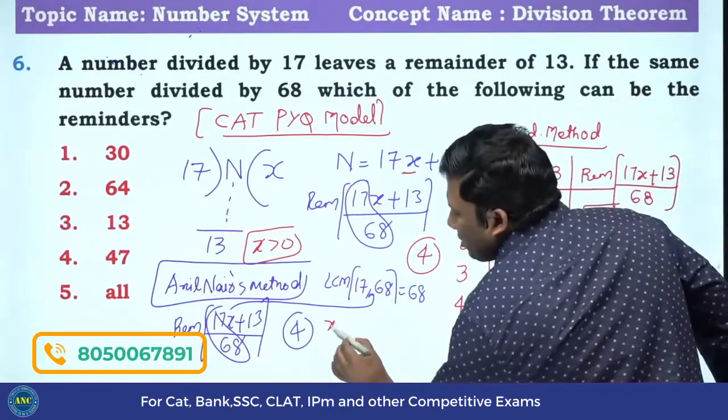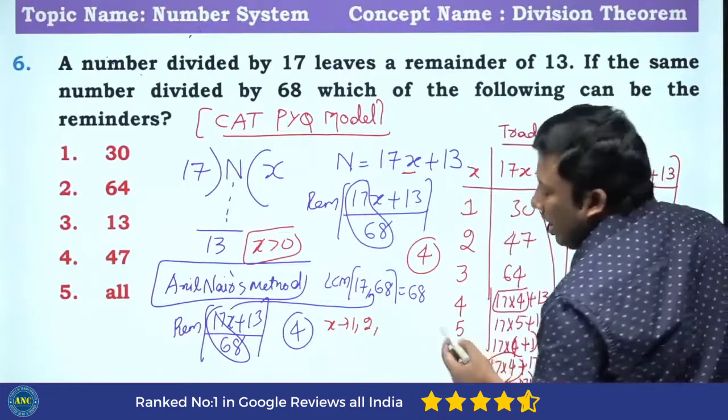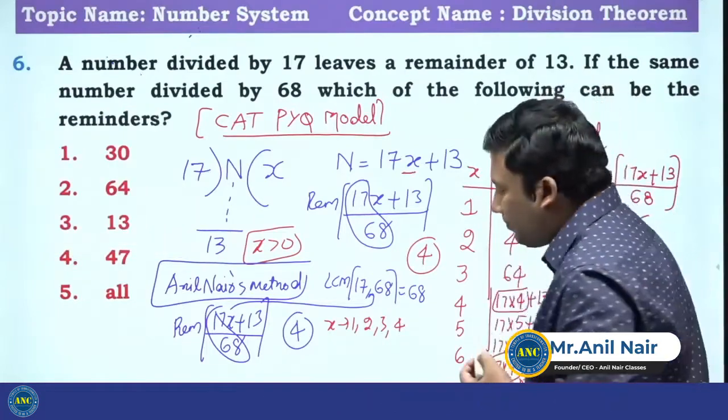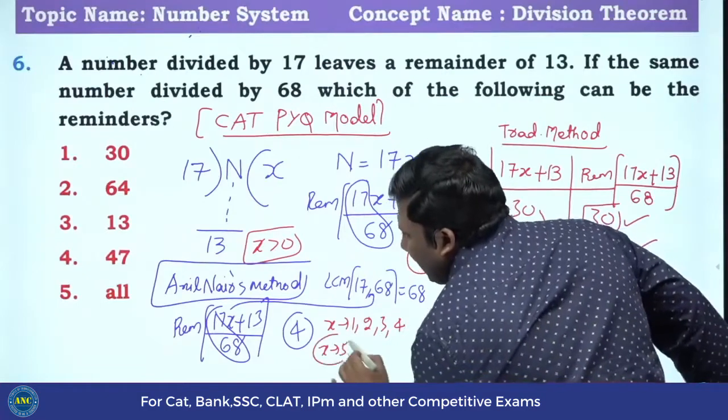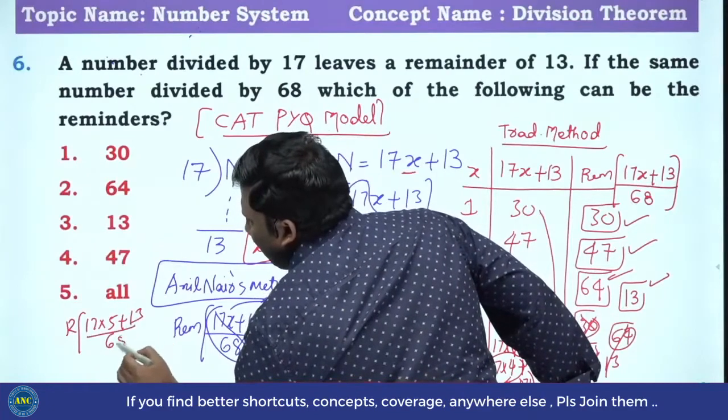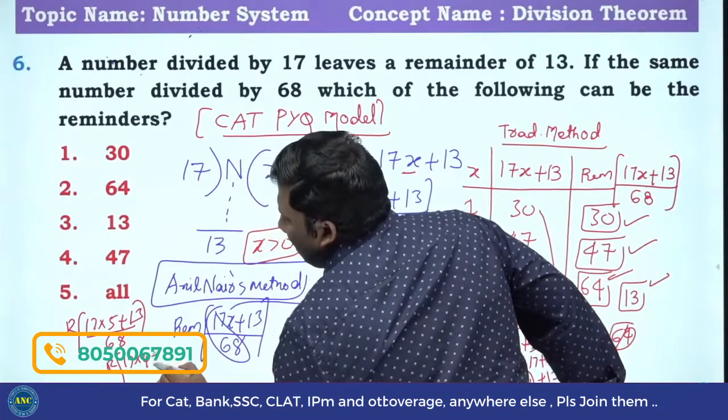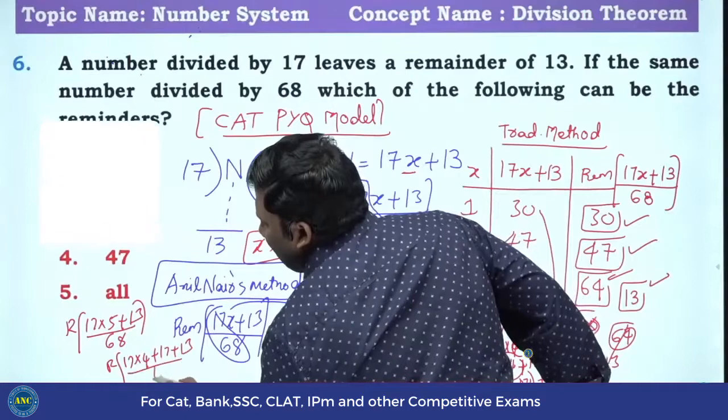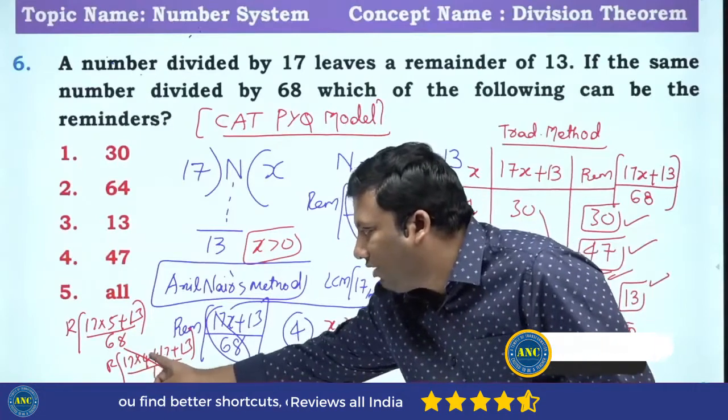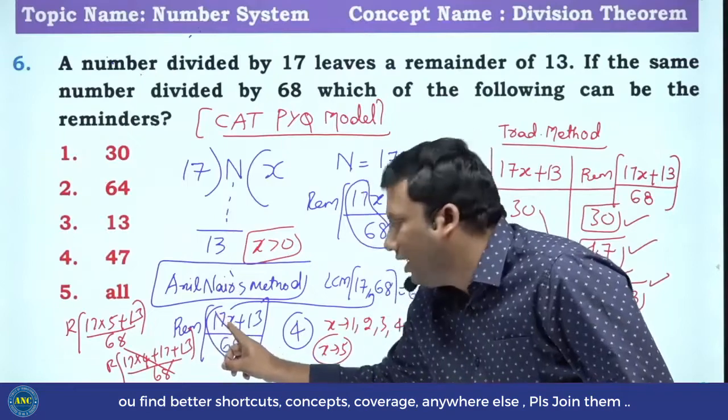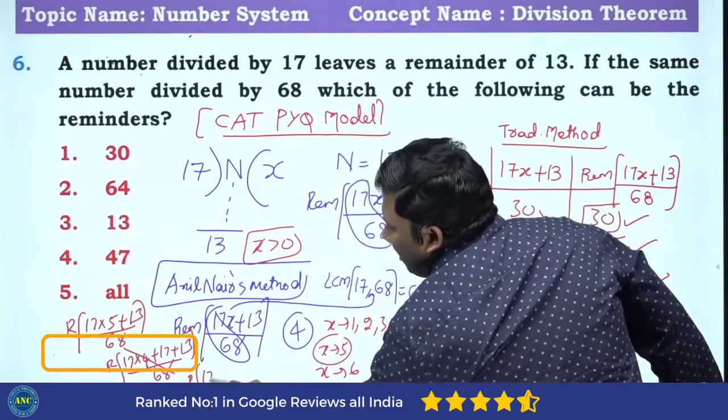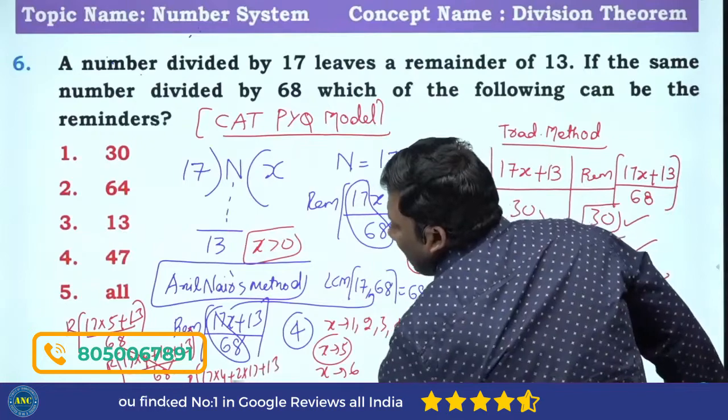Why it is happening? Listen carefully sir. X will be 1 value, I will get a remainder. X is 2, I will get a remainder. X is 3, I will get a remainder. X is 4, I will get a remainder. Yes or no? If I take X value 5, just now we discussed, 17 into 5 plus 13 divided by 68. This can be written as 17, 17 into 4 plus 17 plus 13 divided by 68. It is perfectly divisible. What it is getting perfectly divisible? 17 times 4 is 68. I am making the numerator 17 as a multiple of 68. If I take X value 6, this will become 17 into 4 plus 2 into 17 plus 13. Are you all with me?